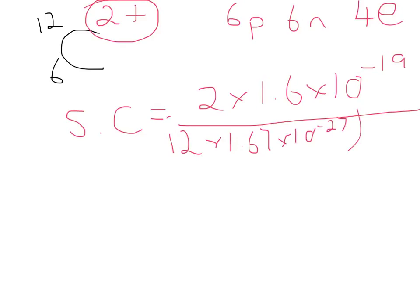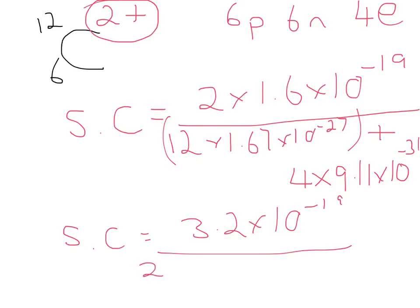Specific charge equals charge divided by mass. So the charge of the ion is now 2 lots of 1.6 times 10 to the minus 19. And we have to divide that by the mass. So we've still got 12 lots of 1.67 times 10 to the minus 27. But now, because it's an ion, remember last time it was just a nucleus. Because this is an ion, we've also got 4 electrons. So the mass, we have to add on 4 times 9.11 times 10 to the minus 31, looking at the mass of an electron from the datasheet.